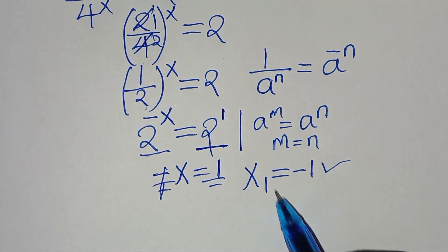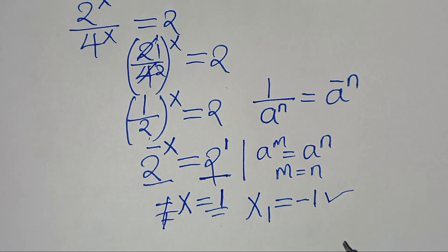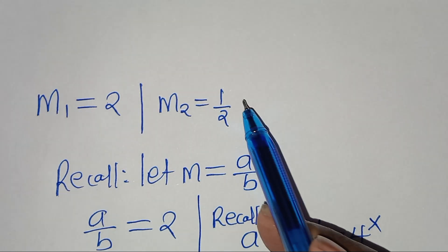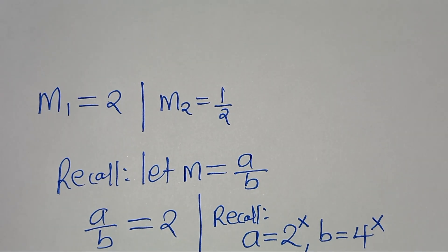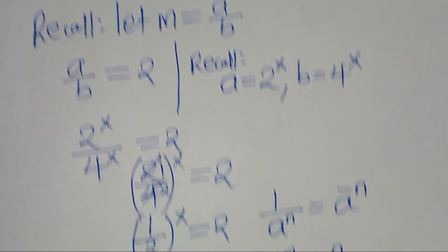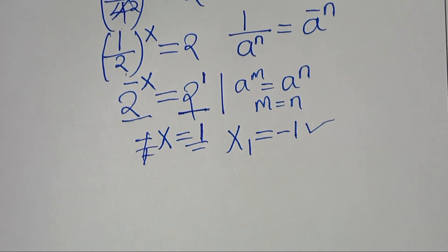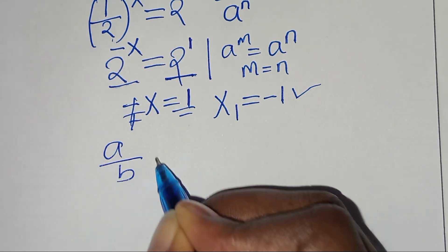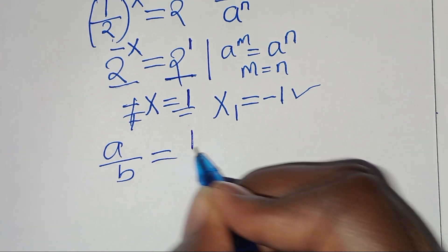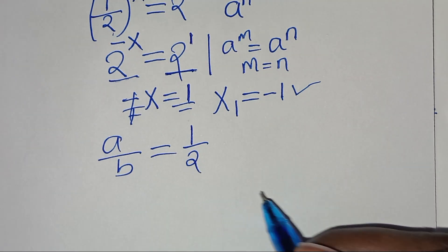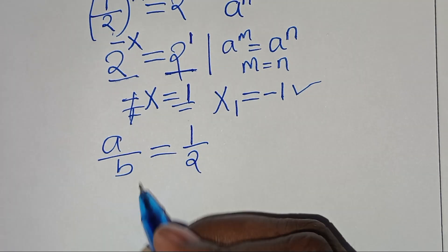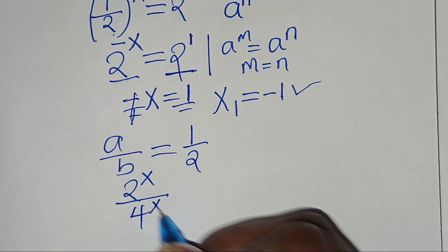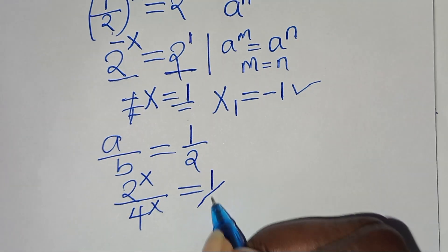Dividing by minus 1, this means that x₁ is equal to minus 1. So this is the first value of x. Now, given that m₂ equals one half, we can solve the corresponding value of x. So again, a over b equals one half, which means 2 to the power of x divided by 4 to the power of x equals one half.